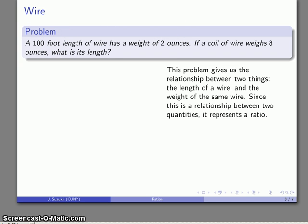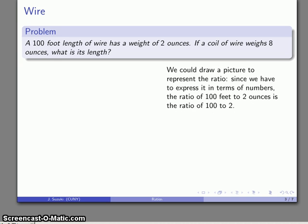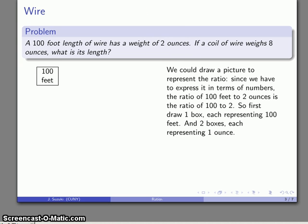There's a little bit of a problem if I focus just on the numbers. I could draw a picture very easily representing this ratio, 100 to 2. I'm going to first draw 100 boxes. Well, I really don't want to do that. Rather than drawing 100 boxes, each representing one foot, maybe I'll just draw one box, and that's going to represent 100 feet. And likewise, my two ounces, rather than drawing two boxes, each representing one ounce, I'll draw one box that represents two ounces.